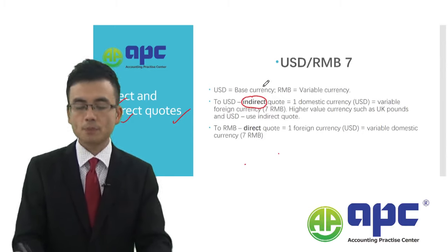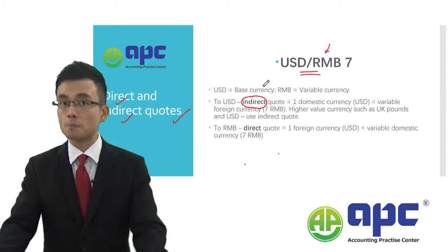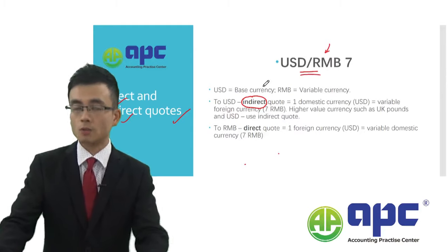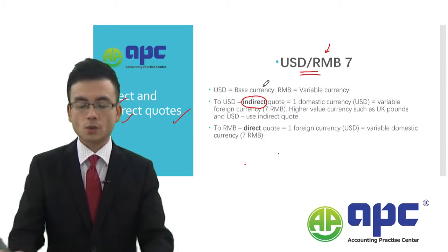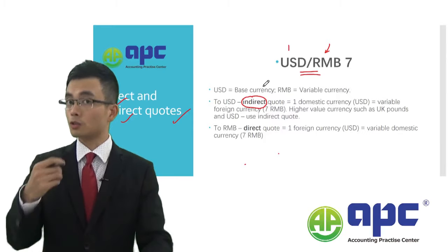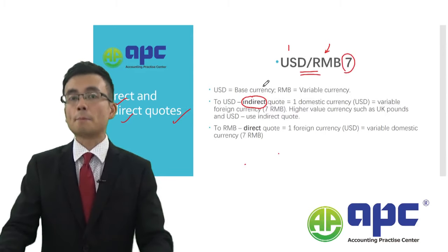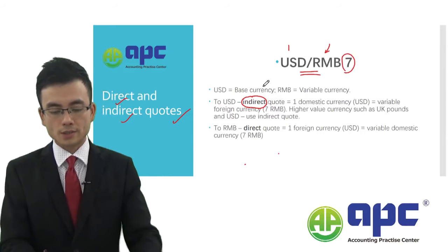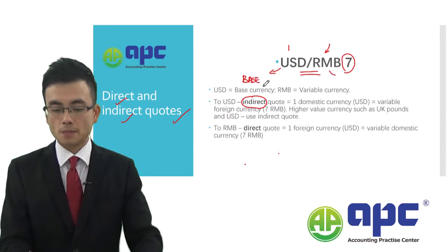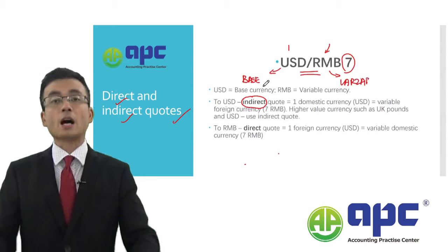So let's look at the USD and RMB. RMB is the currency in mainland China, so that means one USD — if you want to have one USD — you have to provide seven RMB. We can see in this quote that the USD is the base currency, and the RMB is the variable currency. That's the first step you have to understand.